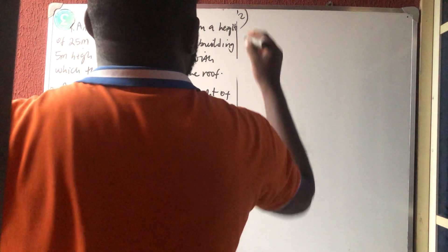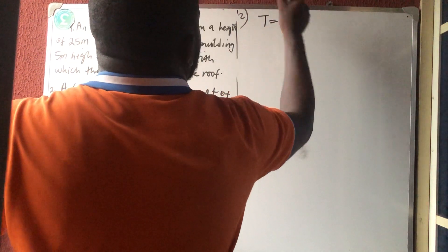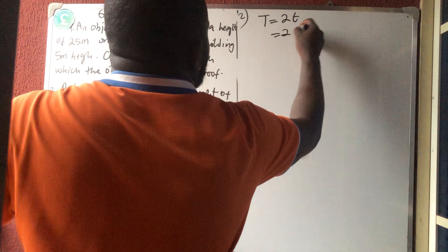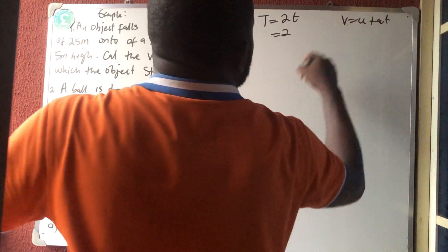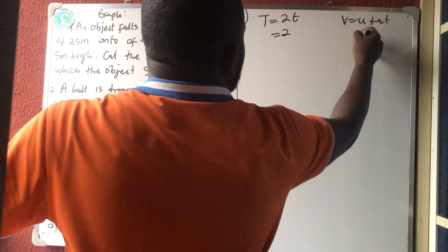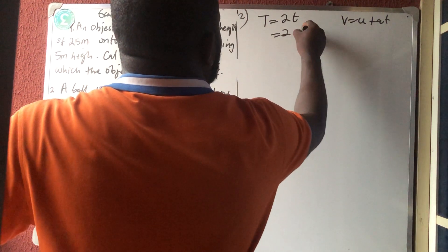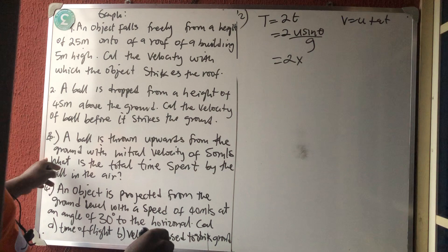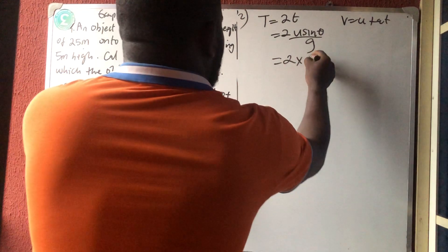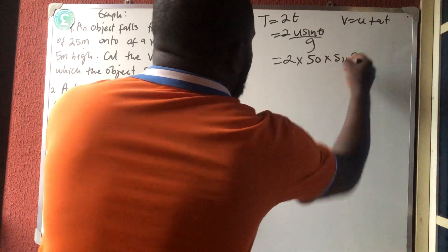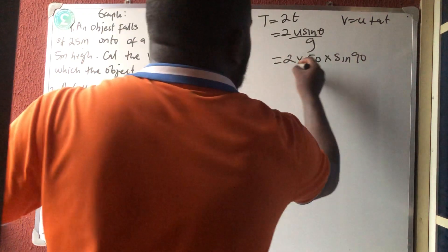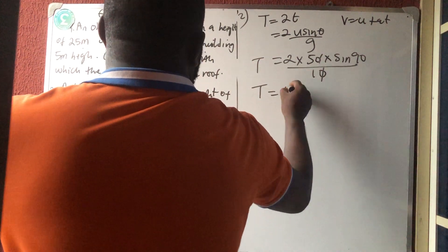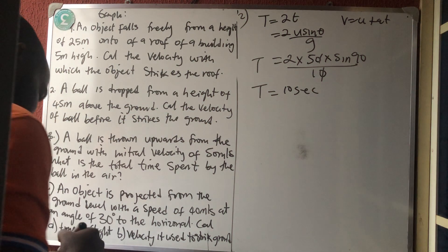The time of flight is 2T, which equals 2U sine theta over G. For number 3, the initial velocity is 50, so we have 2 times 50 times sine 90, all over 10. Sine 90 is 1, so T equals 10 seconds.